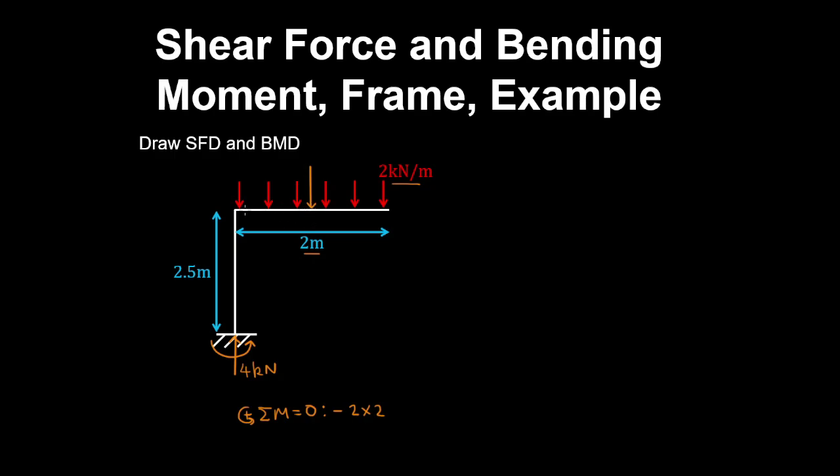So the moment arm is 1 meter. Plus the moment reaction equals 0. Therefore, the moment reaction is 4 kN meters.